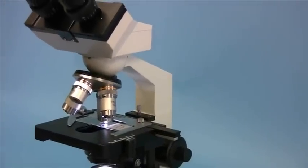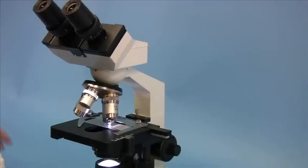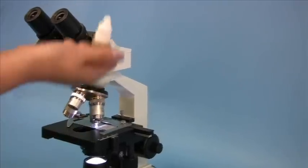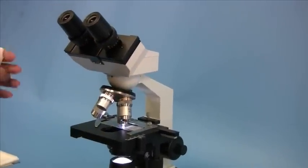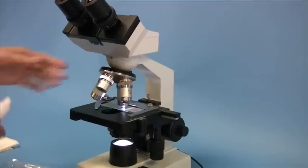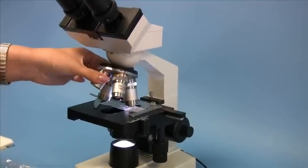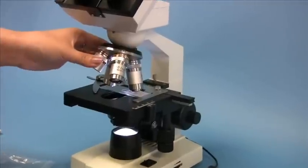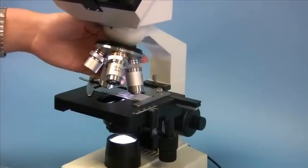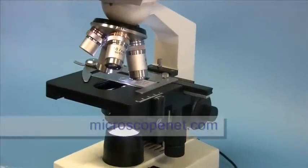For the 100x objective, the same procedure applies. However, you also need to use the immersion oil. In order to do this, simply rotate the revolving nose piece so that the observing position is right between the 40x and 100x objective.